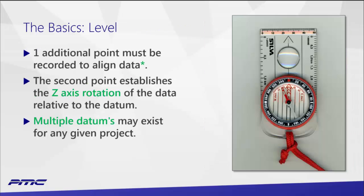Level is in scanning the most important thing we could have. Combined with the datum, as long as we're level we can align with just one additional point. If we ever lose control of level we have a serious problem on our hands, because it's very difficult to establish that again.